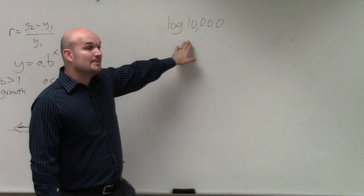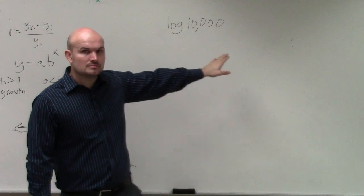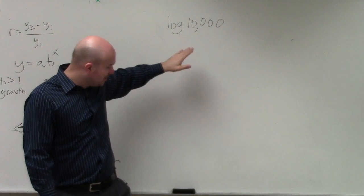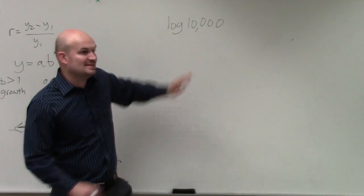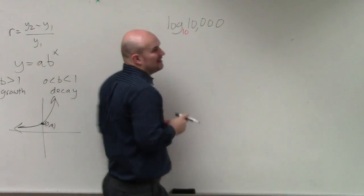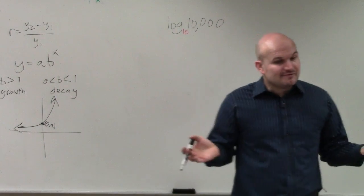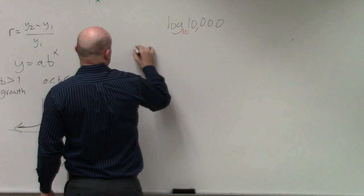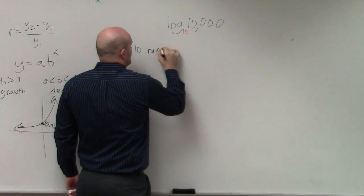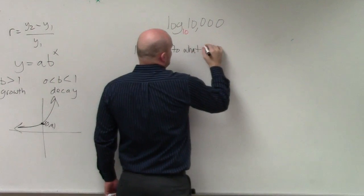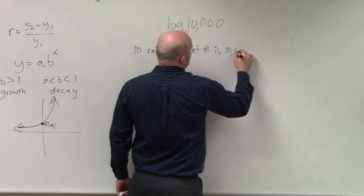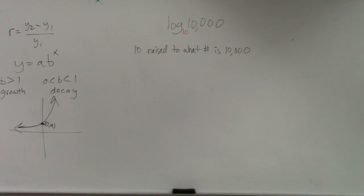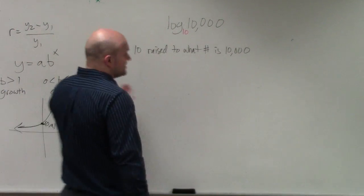If you have a logarithm and you do not have a base, then we will assume the base is going to be base 10. Now, I did give you guys some notes of what exactly logarithms mean, or what they represent. What a logarithm is asking is 10 raised to what number is 10,000? That's basically what a logarithm is asking. So when you guys see a logarithm, and you see this base and this number, what it's asking is 10 raised to what number gives you 10,000?